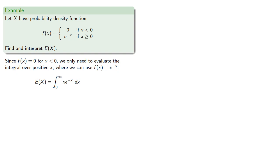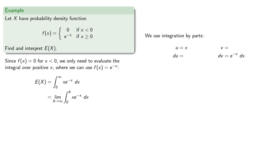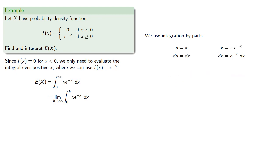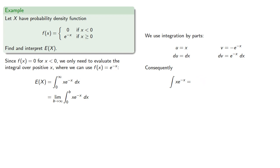Since this is a limit as our upper bound goes to infinity, we need to limit away from that. So we'll rewrite this as the limit as our upper bound b goes to infinity of the finite integral from 0 to b of x times e to the negative x. This is one of the integrals we'll do by parts. We'll let u be x and dv be e to the negative x, so differentiating and anti-differentiating gives us our integration by parts result, which is our indefinite integral.